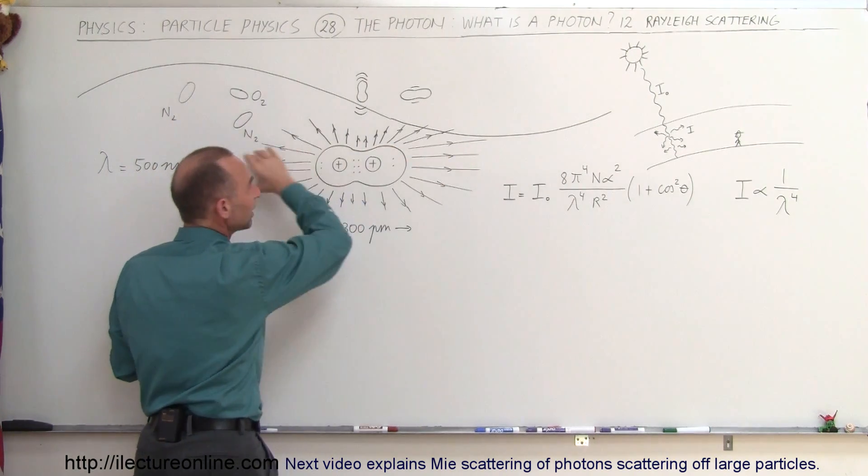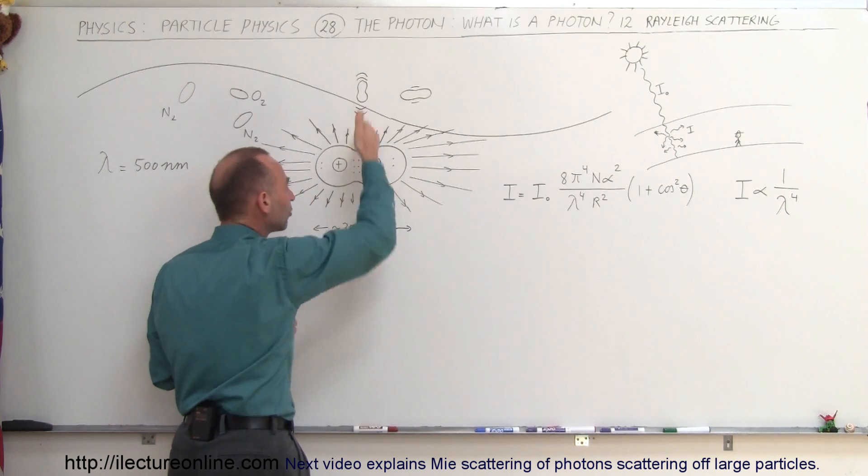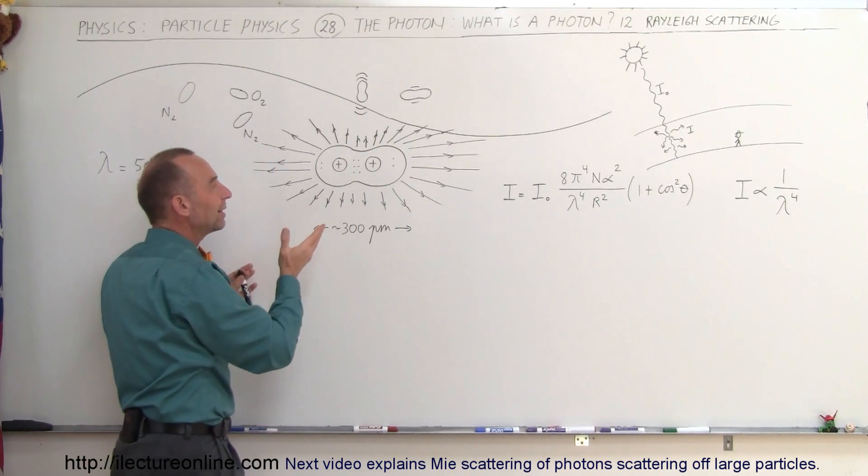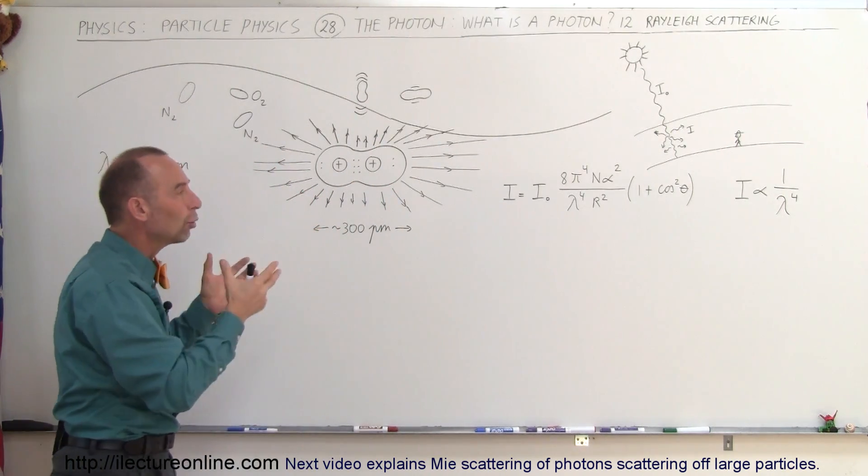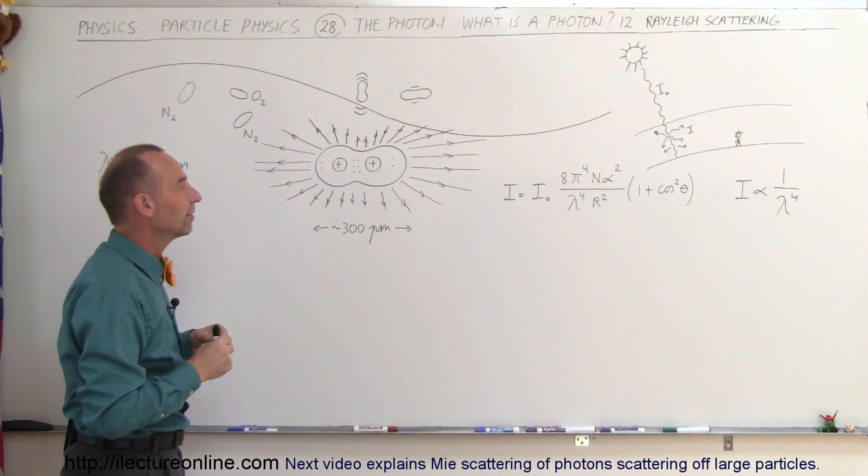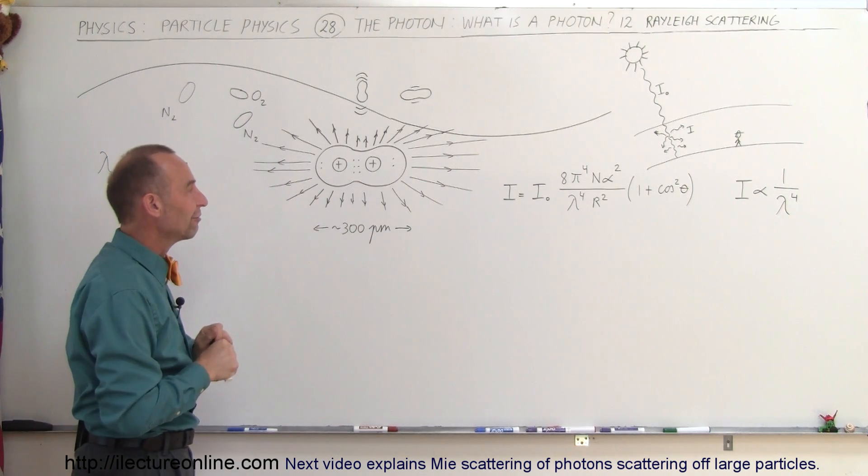It'll transmit the energy in this direction more readily than in this direction. And because of that, the air tends to polarize the scattered sunlight. And so there's a certain polarization factor to it.